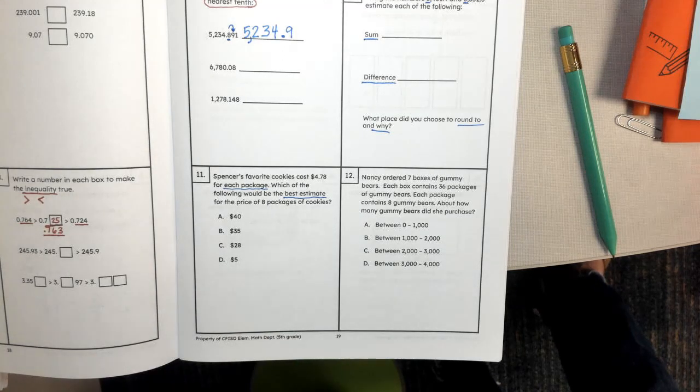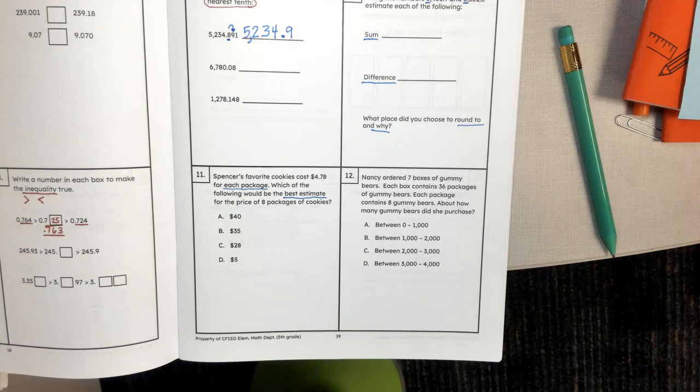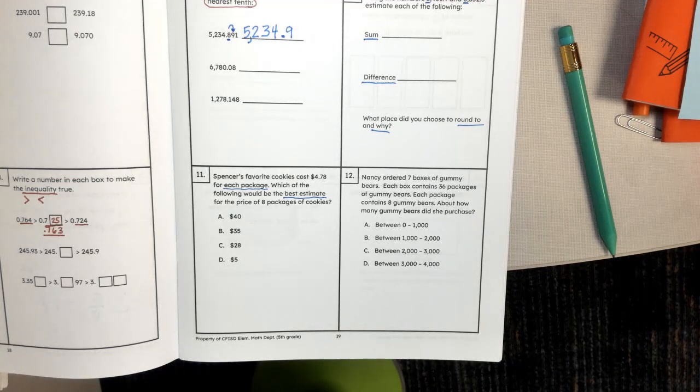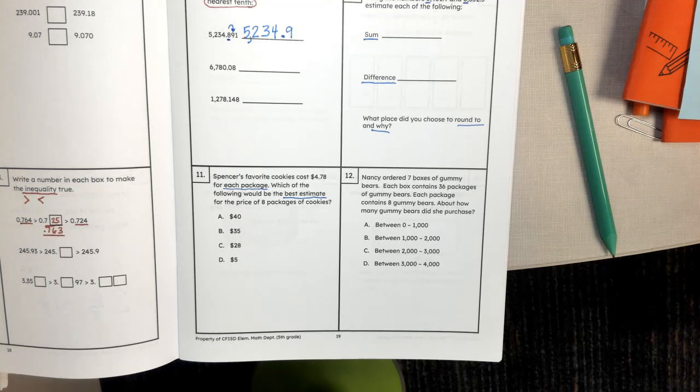And finally, this help is for number 12. Nancy ordered seven boxes of gummy bears. Each box contains 36 packages of gummy bears. Each package contains eight gummy bears. About how many gummy bears did she purchase?